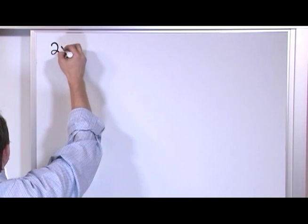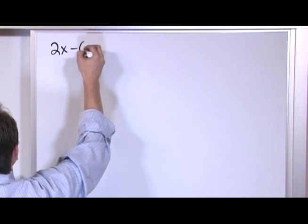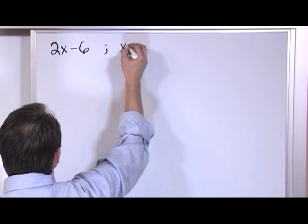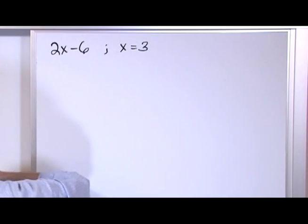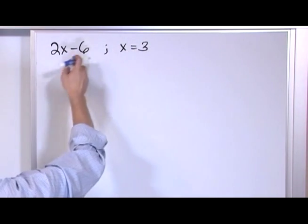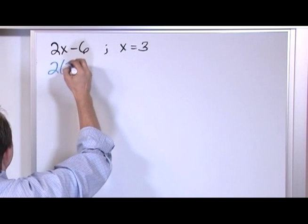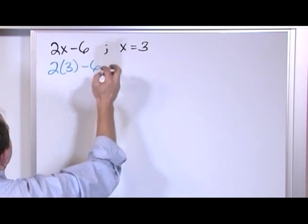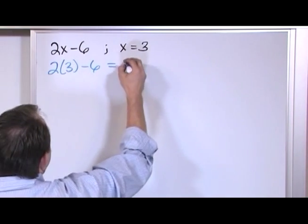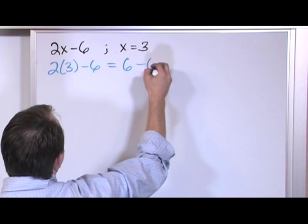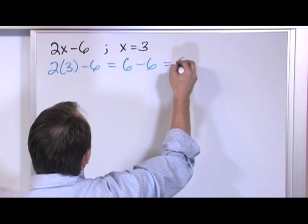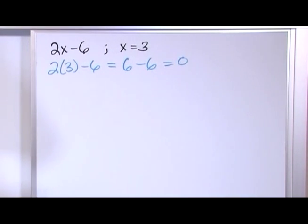What if you have 2x minus 6, where x is equal to 3? We just plug it in: 2 times 3 minus 6. 2 times 3 is 6, minus 6 is going to give us 0. That's the answer.